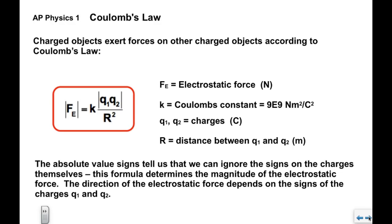The absolute value signs tell us that we can ignore the signs on the charges themselves. If one of them is positive and one is negative, the formula determines the magnitude of the electrostatic force. The direction of the force depends on the signs of the charges Q1 and Q2 and how they're arranged physically.